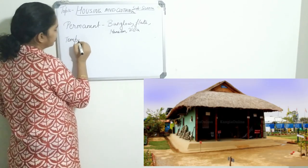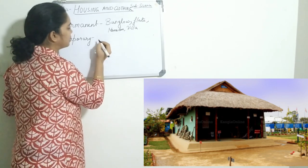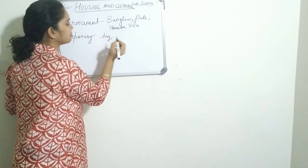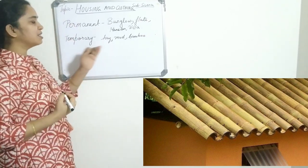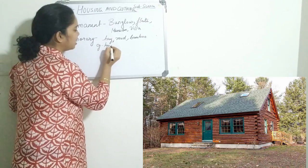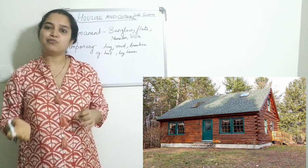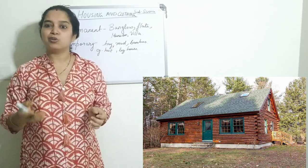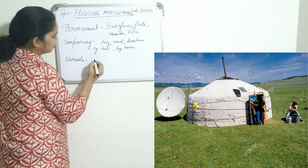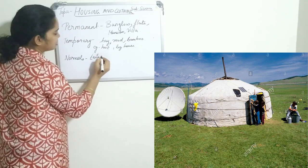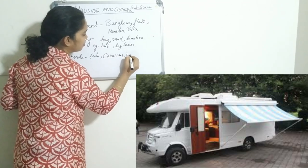Next, coming to temporary houses — you might have seen these in the villages. They generally constitute houses made up of hay, mud, and bamboo. The examples are hut and log house. Many people move from one place to another; they are called nomads. Nomads live in houses like tents, or they use houses on wheels like a caravan or a boathouse.